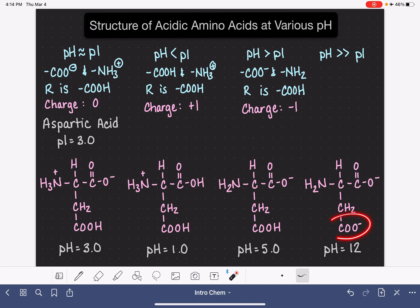We're going to have a COO minus on our normal acid group. The amino group is going to stay NH2 with no charge on it, and the R group is going to be also a COO minus. For this particular version of the molecule we have two negatively charged oxygen atoms, and so the charge on this version is a negative two.